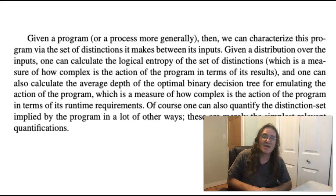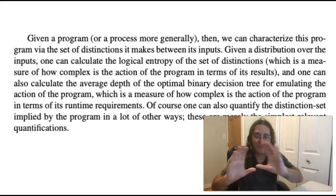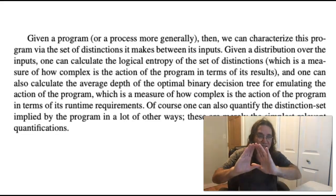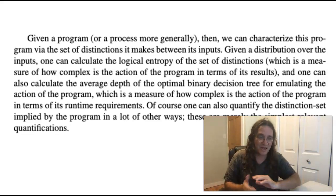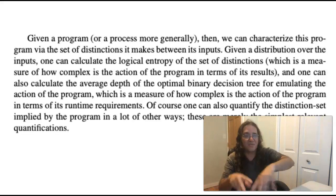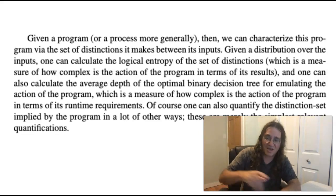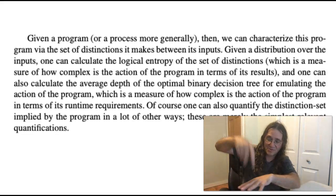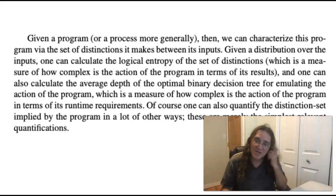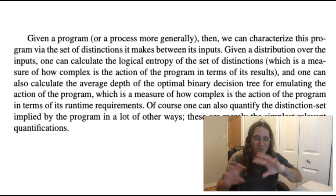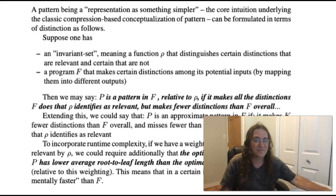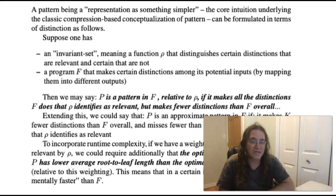Now interestingly if you make a sort of optimal, like a minimally sized binary decision tree representing what that program does, how it maps inputs into outputs, the average depth of this optimal binary decision tree, the average length from the root to the leaves, is the Shannon entropy. So in a way Shannon entropy is like runtime complexity and logical entropy is like algorithmic information, very vaguely speaking.